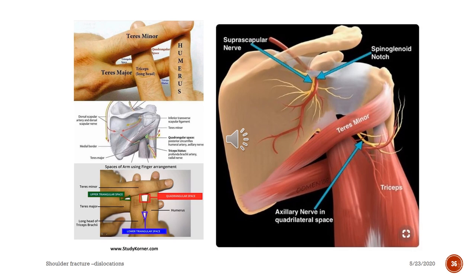Notice the structures around the teres minor muscle, humerus, and long head of triceps brachii. There are three spaces: upper triangular space, quadrangular space, and lower triangular space. The lower triangular space contains the profunda brachial artery and radial nerve; the quadrangular space contains the posterior circumflex artery and axillary nerve; the upper triangular space contains the circumflex artery.